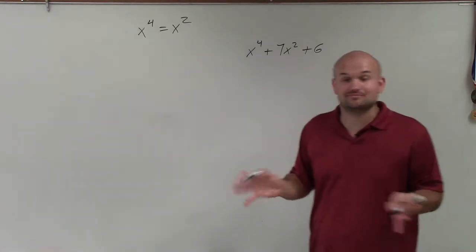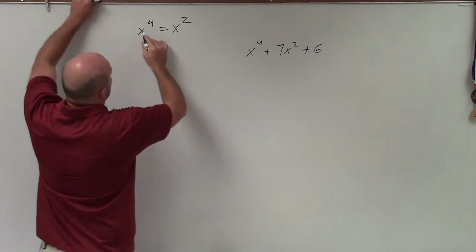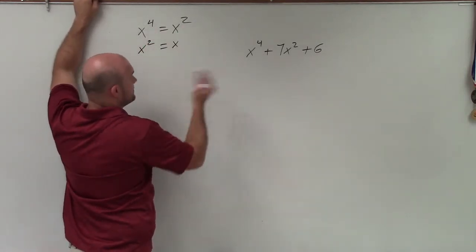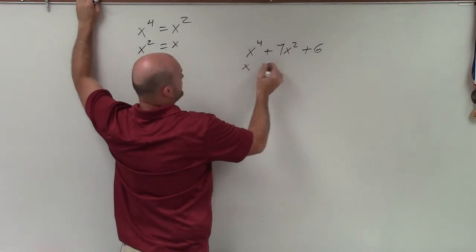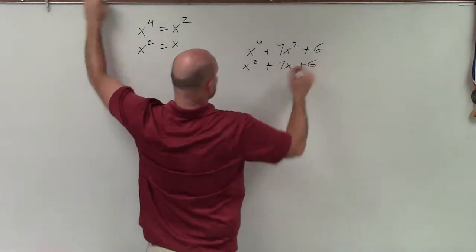So I'm just going to rewrite it. Forget about it. Substitute in x squared in for x to the fourth, and substitute x squared in for x. Therefore, I rewrite the equation as x squared plus 7x plus 6.